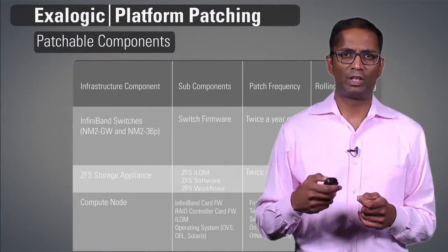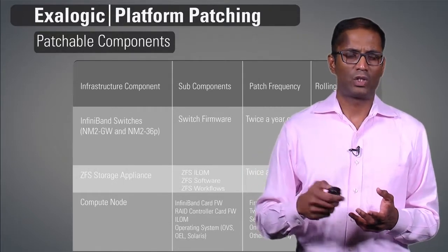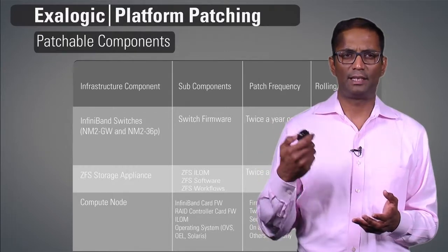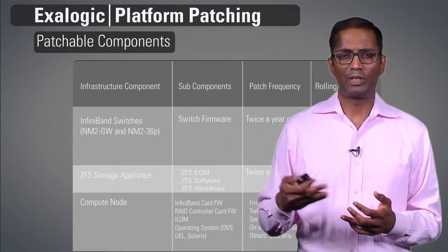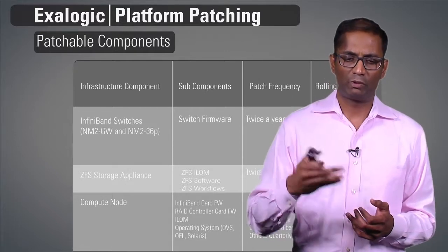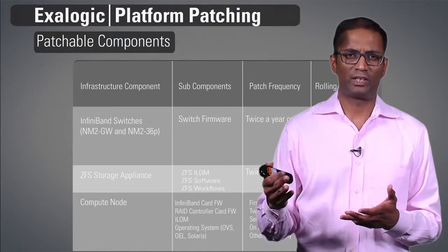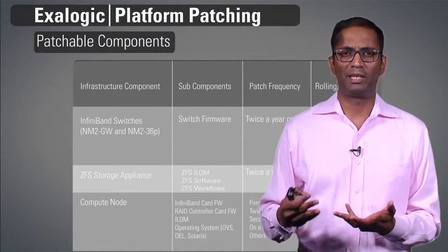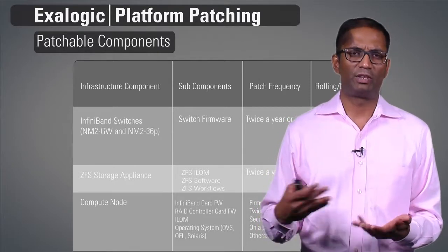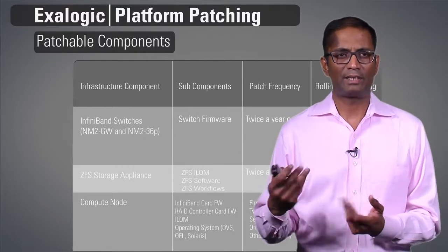Let's look at the various patchable components and the frequency in which they are shipped and whether they can be applied rolling or non-rolling. For the InfiniBand switches — both the NM2 gateway switch and the NM2-36P switch — the component that needs to be patched is the switch firmware. We try to ship that twice a year or less, though currently shipping more frequently. The reason we want to limit frequency is because it involves a reboot — we don't want to bring a system down just for a firmware patch. This can be applied rolling, and ExaPatch takes care of that.